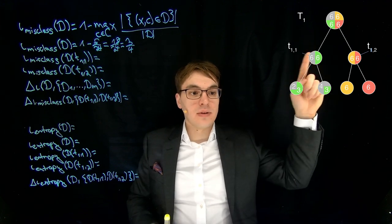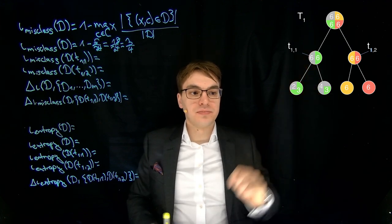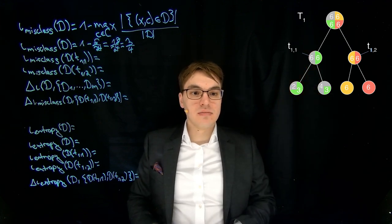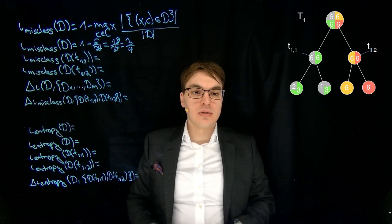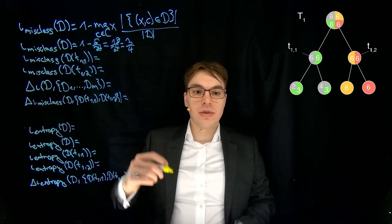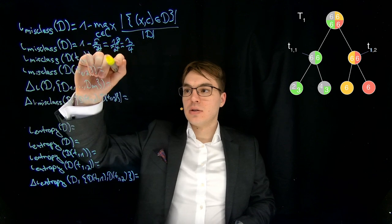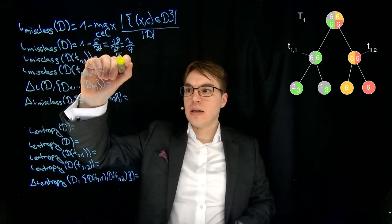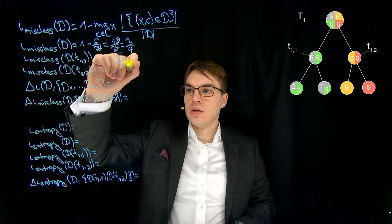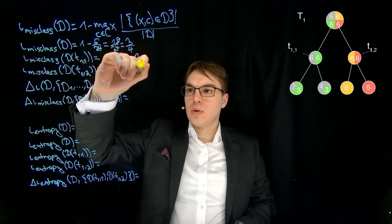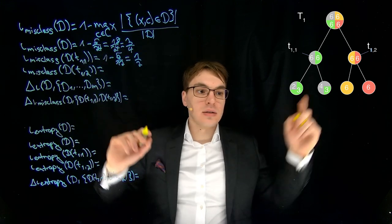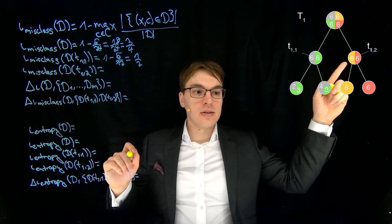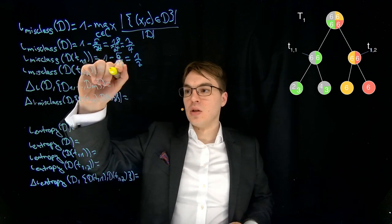For the next split, we select the most common class and compute the misclassification. We get 1 minus 6 divided by 12, which is one half. And this case is exactly the same — we also get one half.